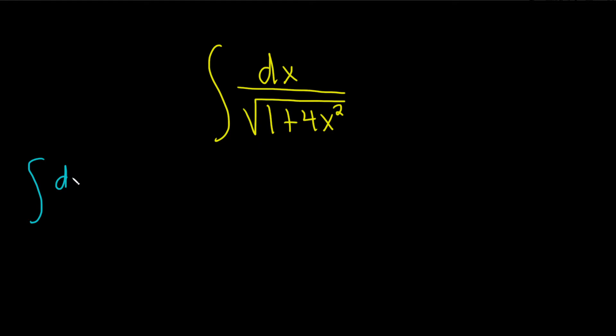If you have the integral of du over the square root of 1 plus u squared, this is equal to the inverse hyperbolic sine of u plus a constant of integration, capital C. So this is the formula that we're going to attempt to use.